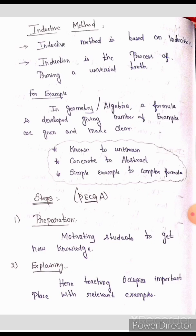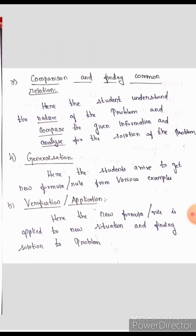Motivate the students; they will be able to develop new knowledge. Preparation will be prepared. Then the second step is Explaining. Explaining means here teaching occupies an important place with relevant examples. One example will be made clear. We can solve it and explain it — both teacher and student explain it. Step 2: Explaining.